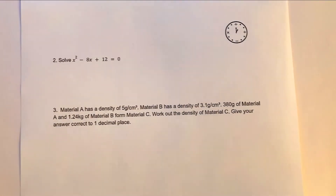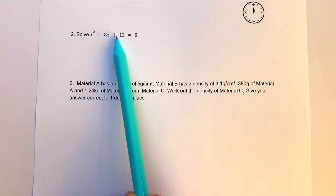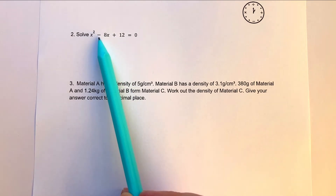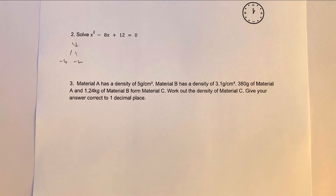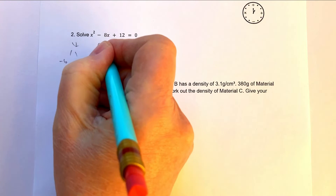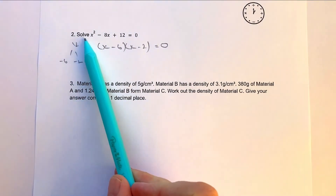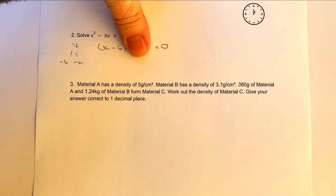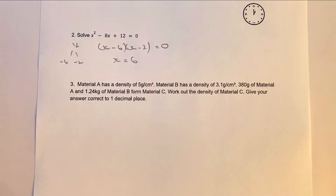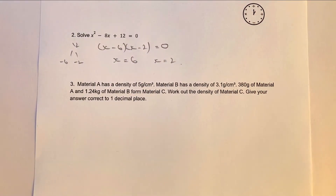Let's move on to question number two, which is a fairly straightforward algebra question where we're asked to solve the equation. We're looking for two numbers that when multiplied together make positive 12, and when added together make minus 8. Those two numbers are minus 6 and minus 2, because minus times minus is a plus, and minus 6 minus 2 gives minus 8. So we write x minus 6 multiplied by x minus 2 equals 0. The question says solve, not factorize, so if x minus 2 equals 0 then x equals positive 2, and similarly x equals positive 6.